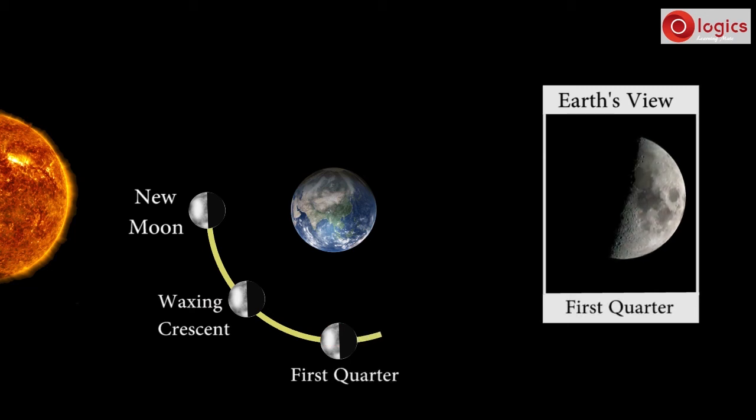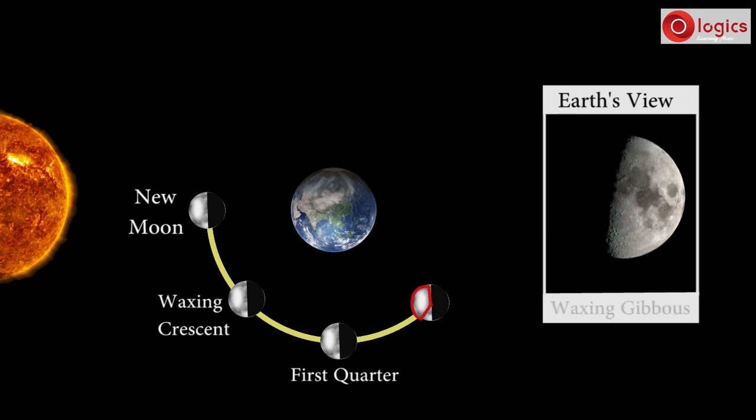Now Moon reaches this region. Observe. More than half of the brighter side is visible. This phase of Moon is called Waxing Gibbous.